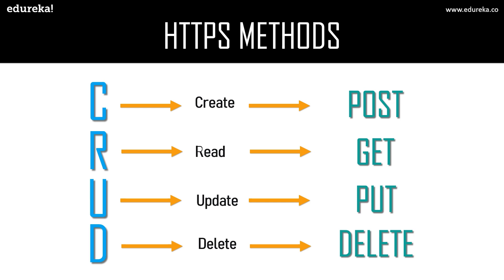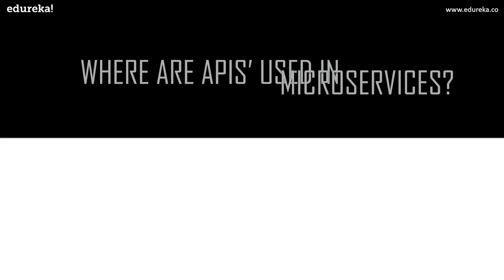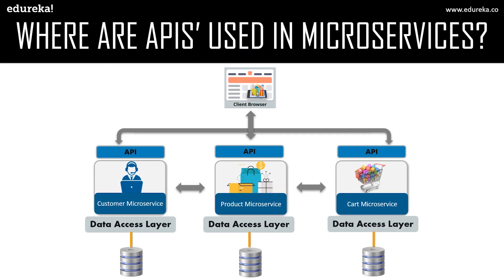If you want to know more about HTTP methods and APIs, you can refer to the session on 'What is an API.' Now that we've covered what microservices and APIs are, let's look at where exactly APIs are used in microservices. APIs act as the middle layer between the client and the respective feature or functionality, and that functionality can reside in a specific microservice.